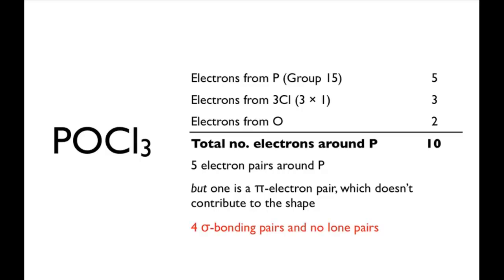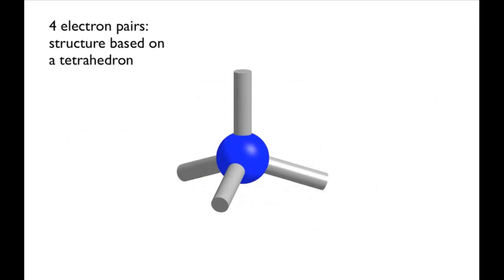The shape of POCl3 is therefore based on a tetrahedron, and as there are no lone pairs, the molecule itself is also tetrahedral.